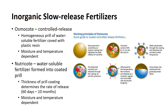Since the mid-1950s, a number of slow or controlled-release products have been introduced as fertilizers. Osmocote is a controlled-release fertilizer. It is a homogenous prill of water-soluble fertilizer covered with a plastic resin. The prills do not dissolve in water, but they become hydrated and release the nutrients as a result of osmotic pressure. The process is moisture and temperature dependent. Therefore, the nutrients are not readily available when soils are dry or cold.